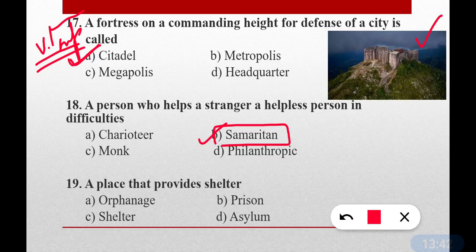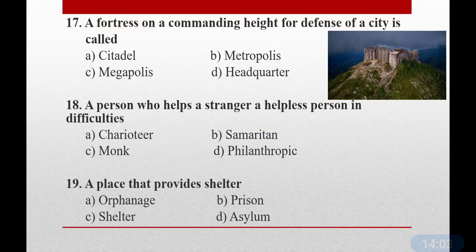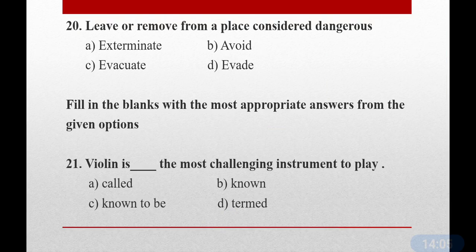Question number nineteen: A place that provides shelter. The answer is asylum — option D is correct. Asylum is basically a place where refugees are kept — 'sharnarthiyon ko jahan rakha jaata hai' — that place is called asylum.